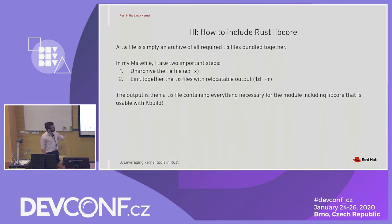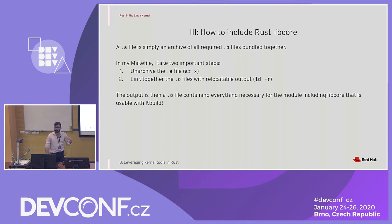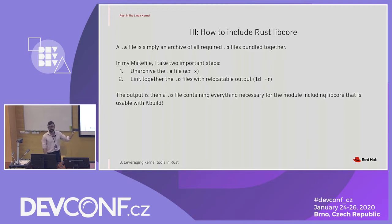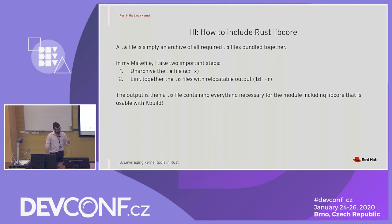This is a little bit more manual than some people might like, but it does work consistently. Because static libraries really are just archived object files, what we're going to want to do is basically unarchive that static library. Then with LD, we can just link all of those object files together and get an object file that gives us exactly what we need. This object file can then just be passed directly off to Kbuild.